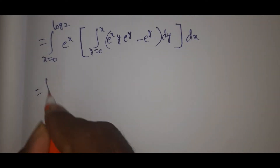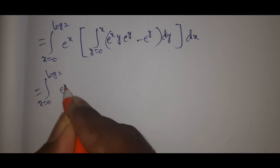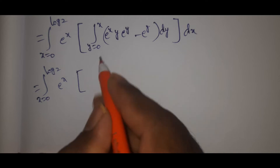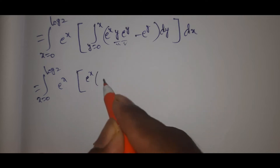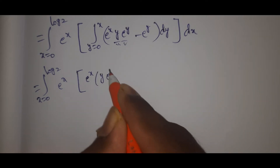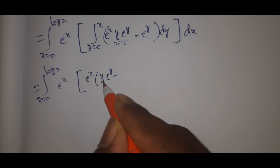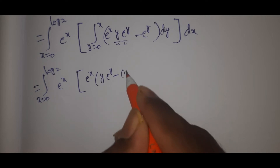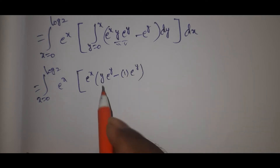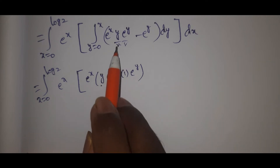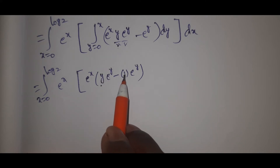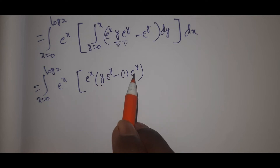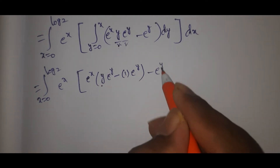That equals the integral from x equal to 0 to log 2 of e to the power x. Now for the y-integration, we use integration by parts with u and v. Taking y as u and e to the power y as v, the derivative of y is 1, and the integral of e to the power y is e to the power y. This gives y·e to the power y minus e to the power y.